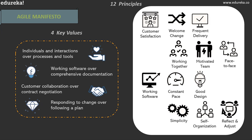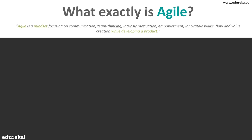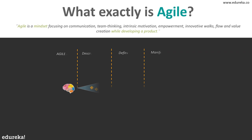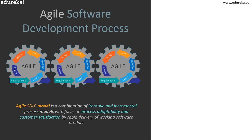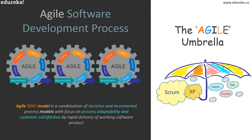Agile is not a methodology or a framework — it is a philosophy, a way of thinking, a movement that helps deliver products and services more quickly. It is a set of ideas that keep a software development team organized and efficient. Agile product development describes a flexible, iterative design and build process where projects are characterized by tasks that are conceived, executed, and adapted as the situation demands, rather than following a pre-planned process.